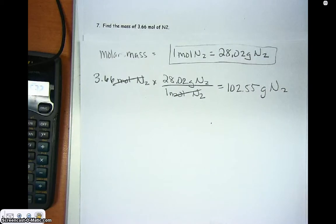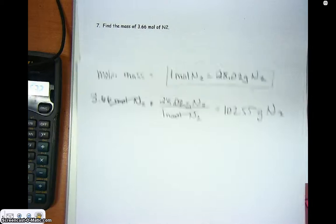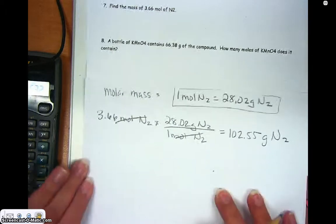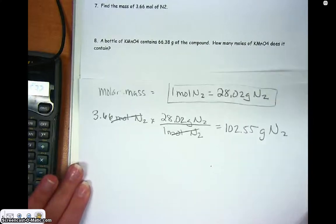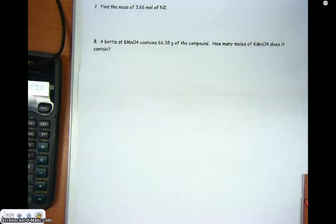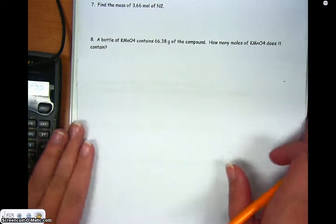Okay, let's look at another example. So let's say I have, let's just do this next one, number 8. It says you have a bottle of potassium, and I think that's manganate, it's MnO4. And it contains 66.38 grams of the compound. How many moles do you have?